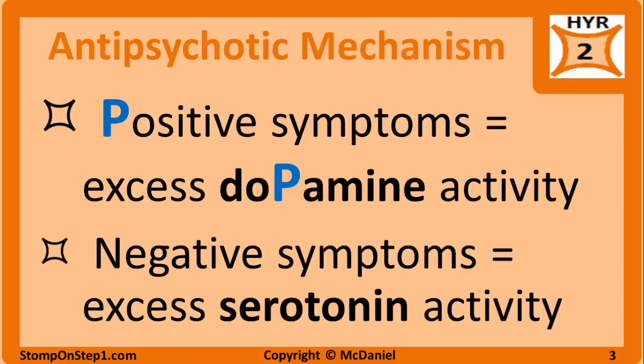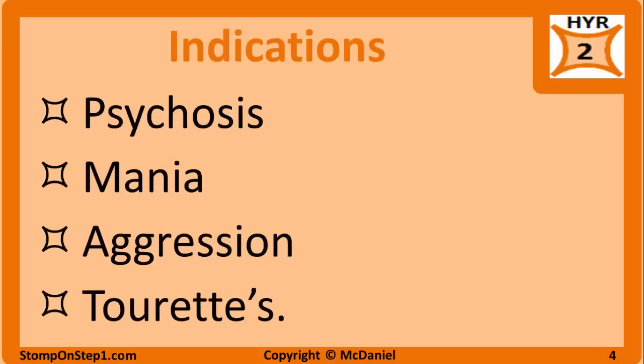Negative symptoms are the absence of normal behavior. Examples include a lack of initiative, diminished speech, disheveled appearance, and flat affect. These symptoms are thought to be related to an excess of serotonin. Antipsychotics affect dopamine and serotonin to varying levels. The indications for this class of drugs include psychosis, mania, aggression, and Tourette's disease.